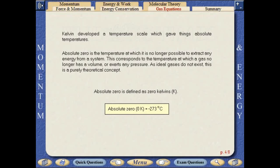Kelvin developed a temperature scale which gave things absolute temperatures. Absolute zero is the temperature at which it is no longer possible to extract any energy from a system. This corresponds to the temperature at which a gas no longer has a volume or exerts any pressure. As ideal gases do not exist, this is a purely theoretical concept. Absolute zero is defined as zero kelvins.